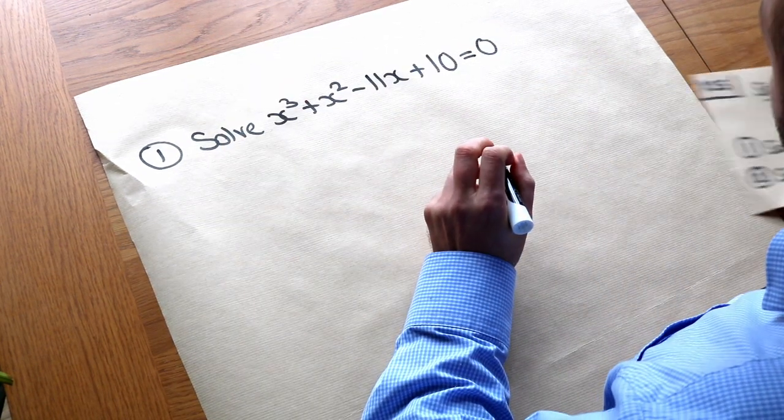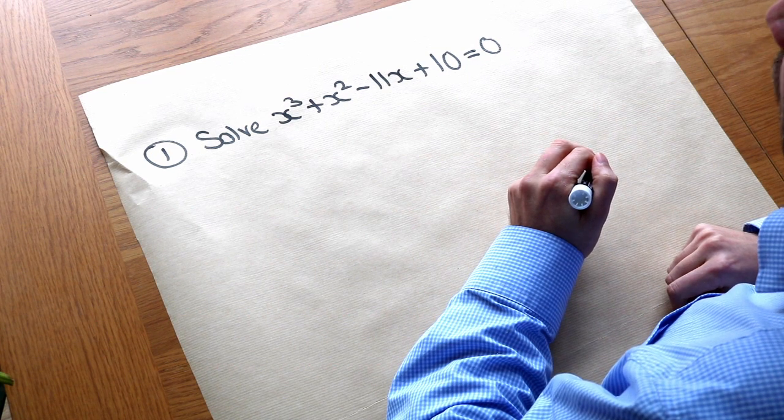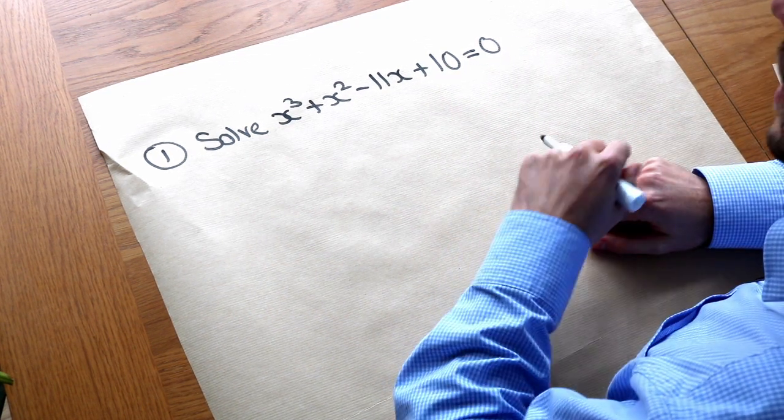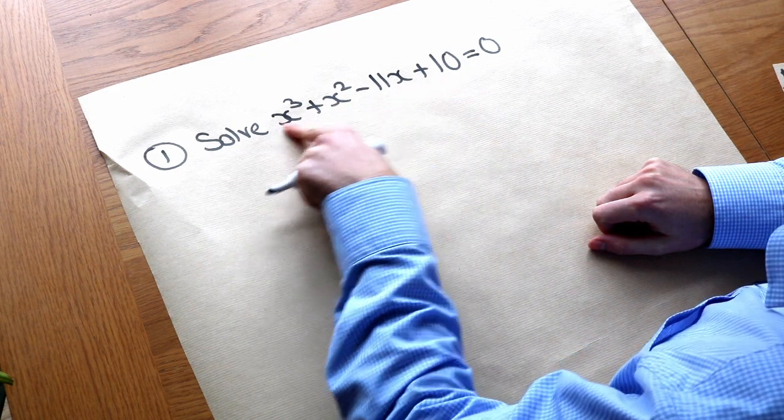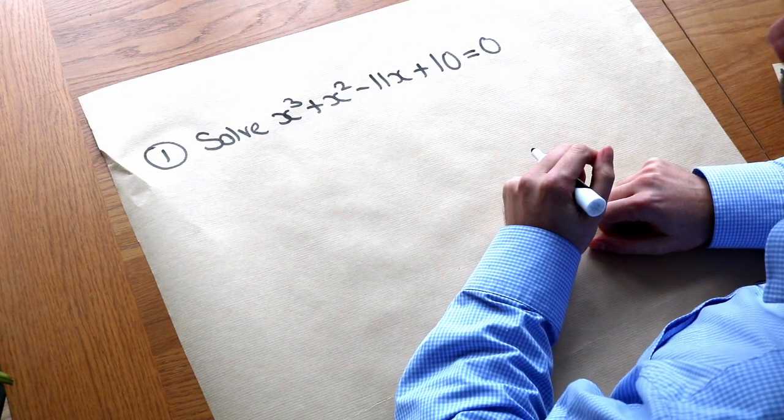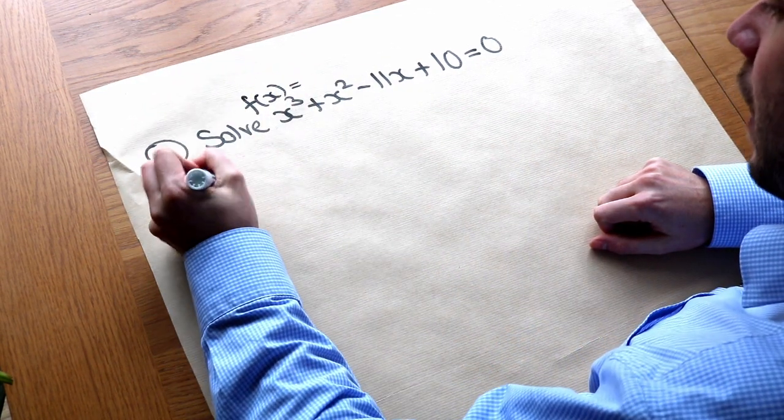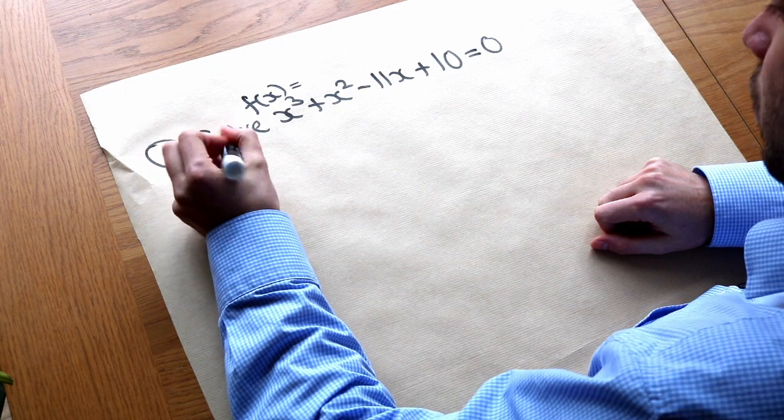Now the strategy here is to use the factor theorem. And if you haven't seen my video yet on the factor theorem, can I advise that you watch that first. And the idea is that if we substitute a particular value into here and it gives us zero, then we can get a factor from that. So if we just call this f of x and let's try f of different values and just hope that we get zero for one of them.